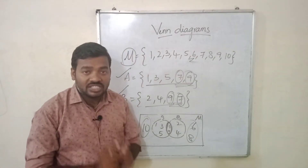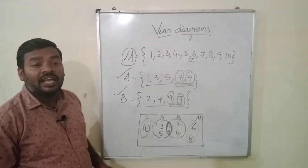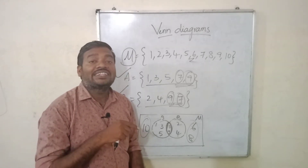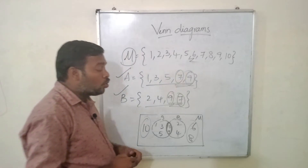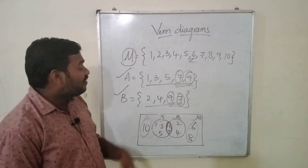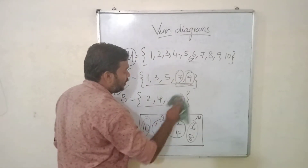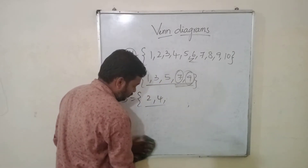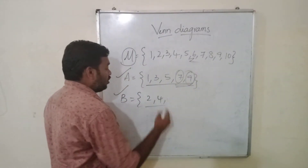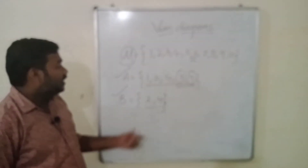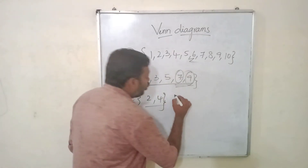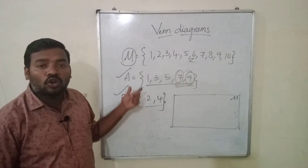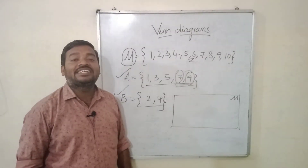First, we need to represent the universal set. Then we have to represent A and B. We have to see whether they are subsets of each other, joint sets, or disjoint sets — that means sets with no common elements. Here we have at least one common element. If there are no common elements, this intersection part is not present.